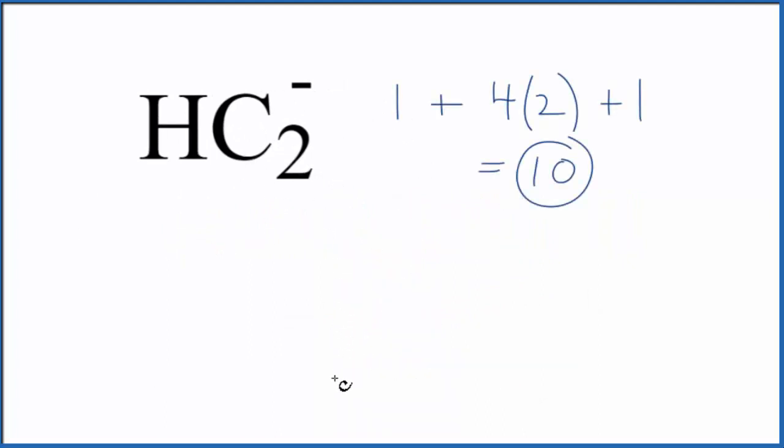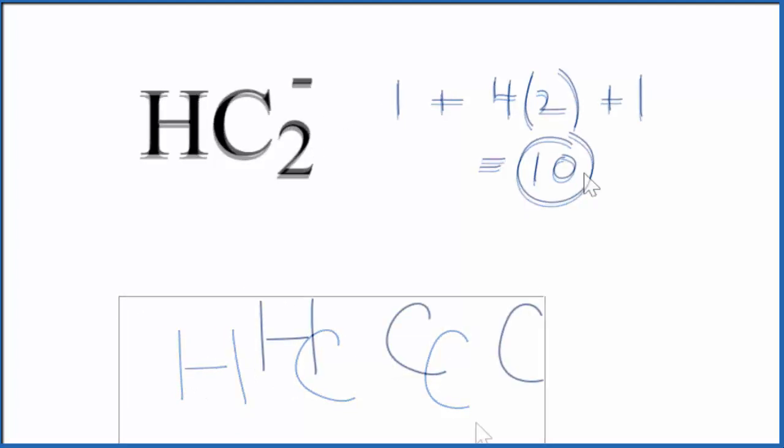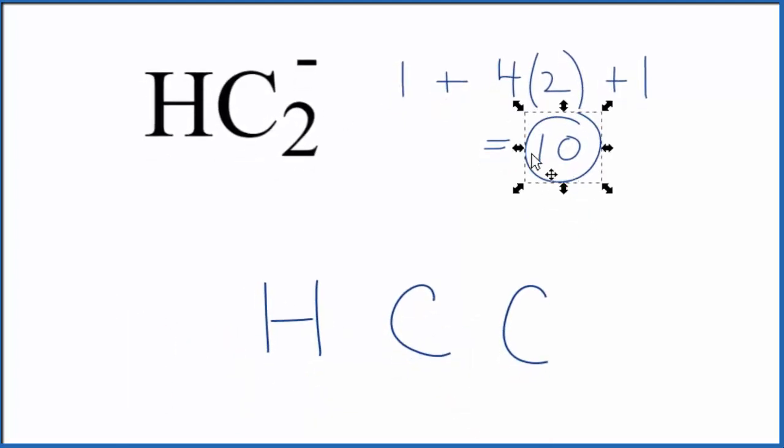So let's put our two carbons up here and hydrogen always goes on the outside, so it'd be on this side or this side, really doesn't matter. Let's put the hydrogen here. So we have a total of 10 valence electrons for the HC2 minus Lewis structure.